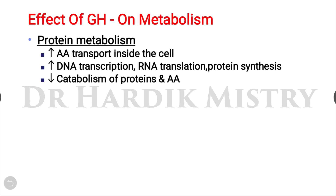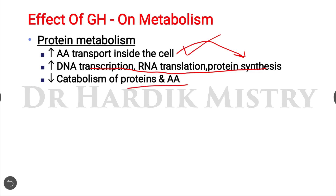On protein metabolism, growth hormone increases amino acid transport inside the cells. It increases DNA transcription, RNA translation, and protein synthesis. Once amino acid transport inside the cell is enhanced, it ultimately leads to increased protein synthesis. It decreases the catabolism of protein and amino acids, having a protein synthesis effect and specifically promoting muscular growth.